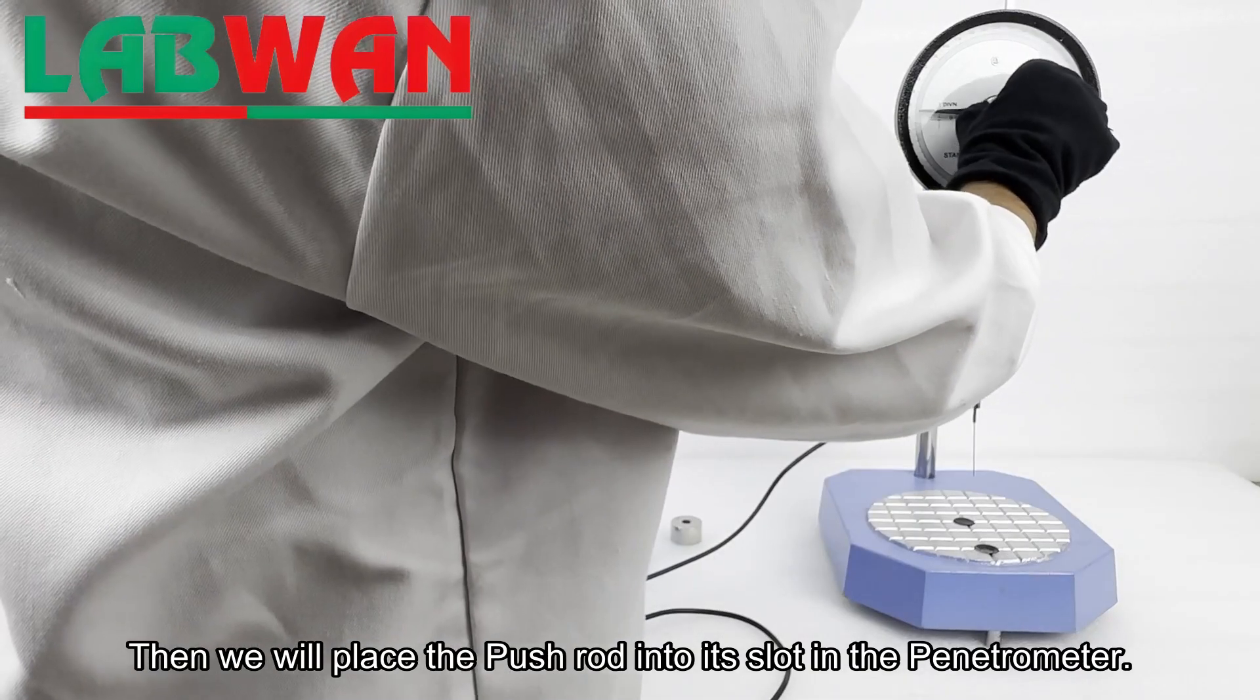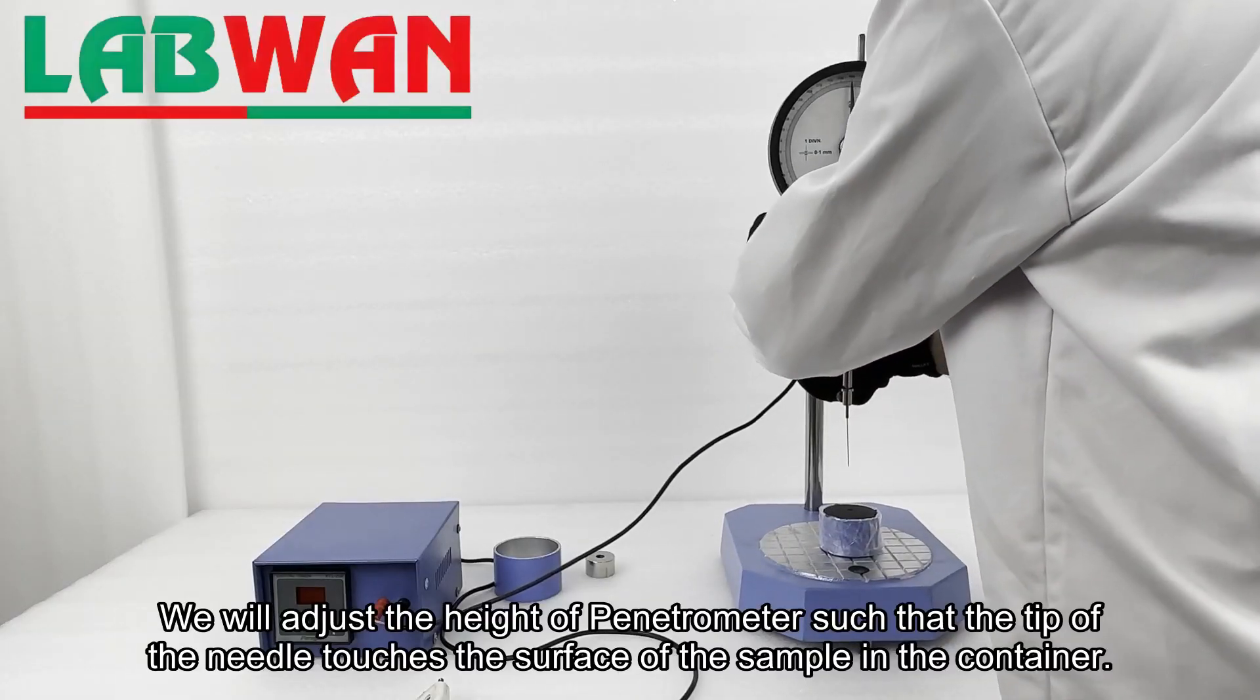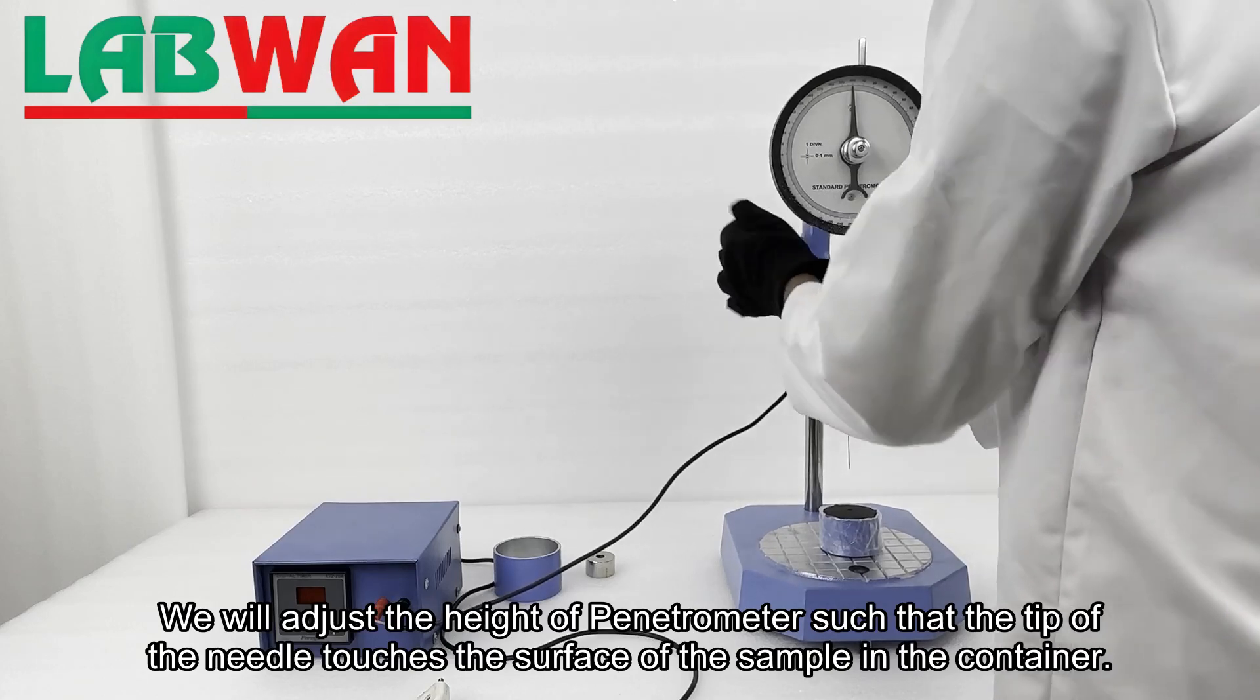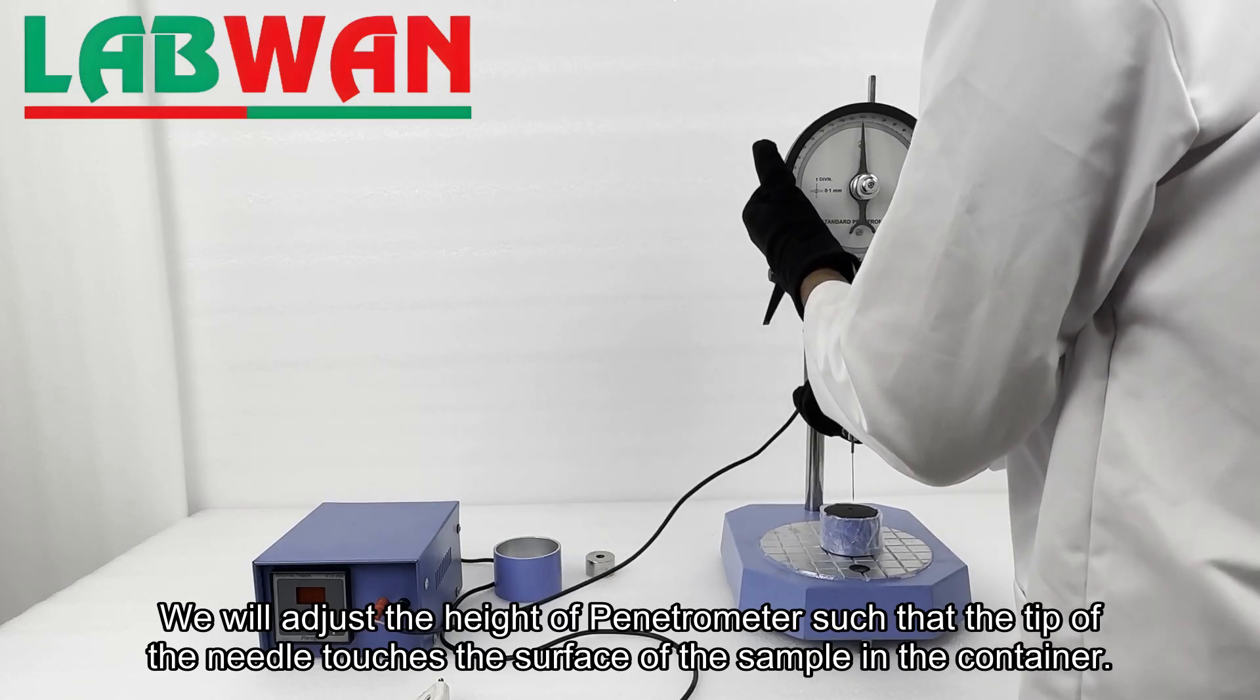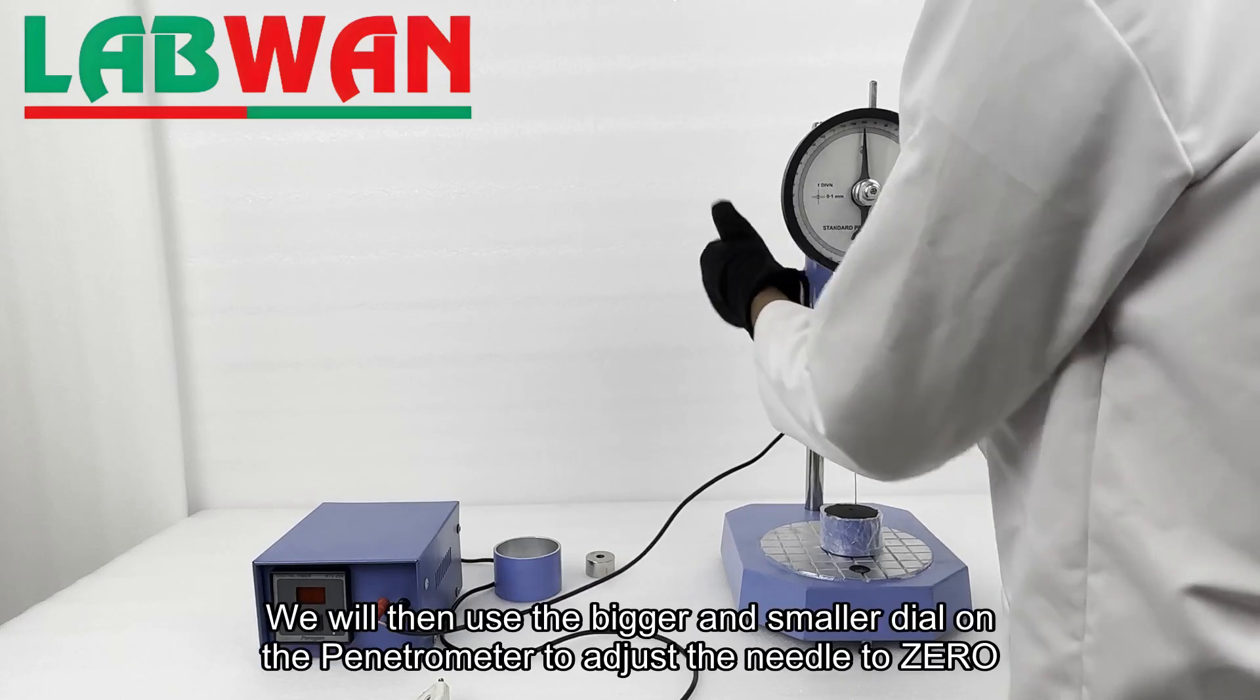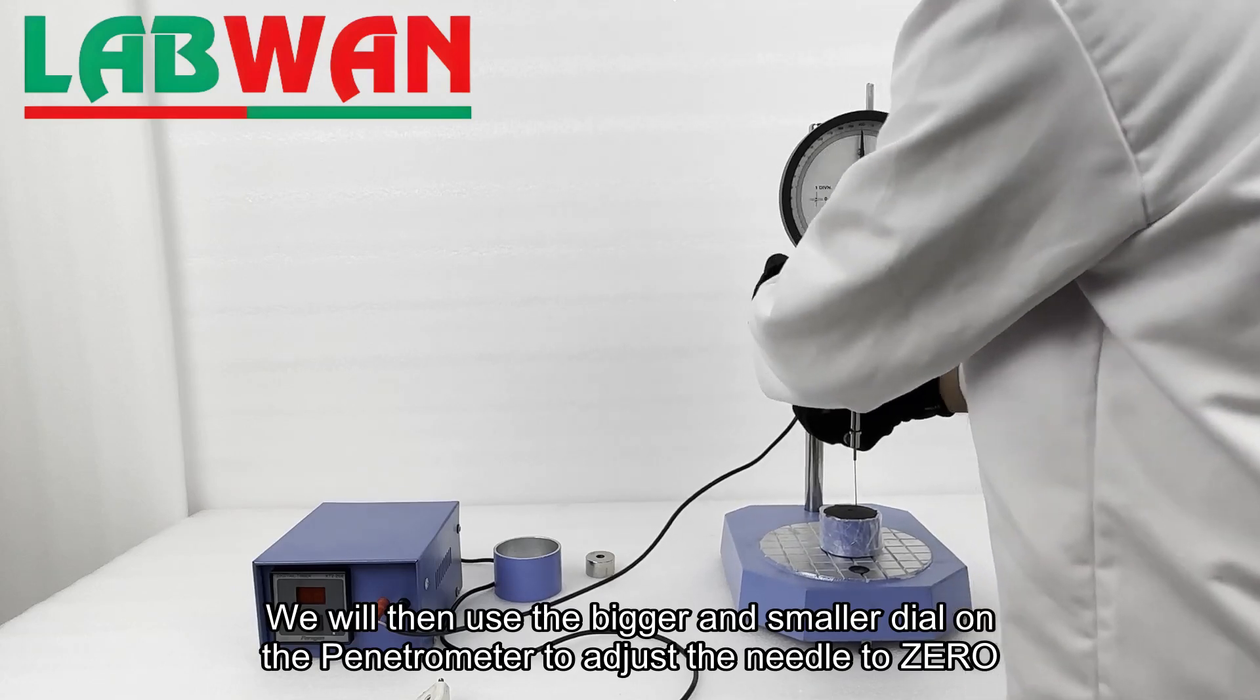Then we will place the push rod into its slot in the penetrometer. We will adjust the height of the penetrometer such that the tip of the needle touches the surface of the sample in the container. We will then use the bigger and smaller dials on the penetrometer to adjust the needle to zero.